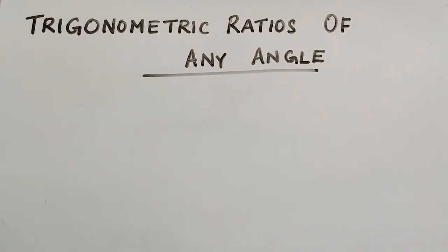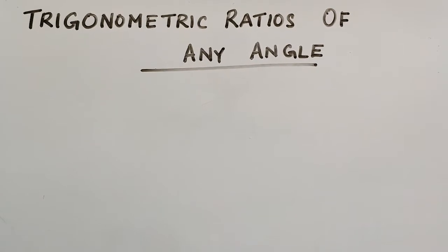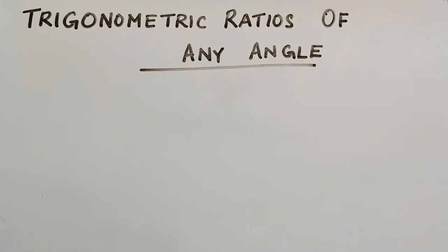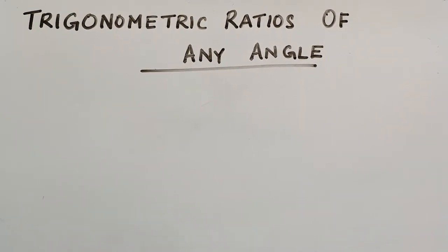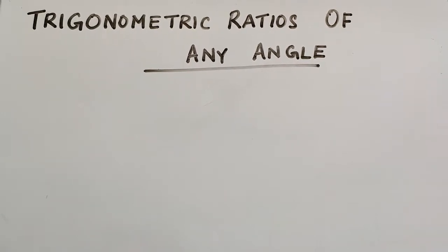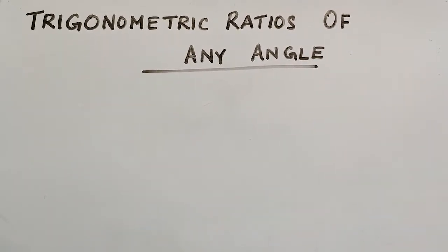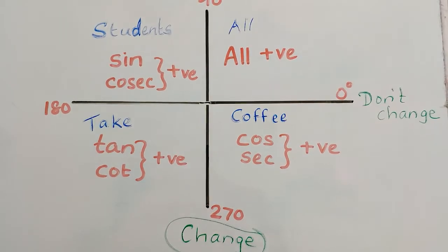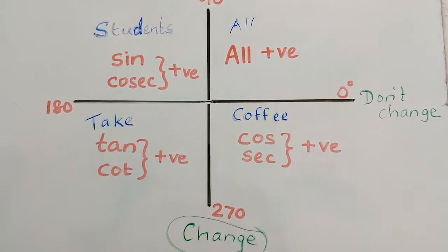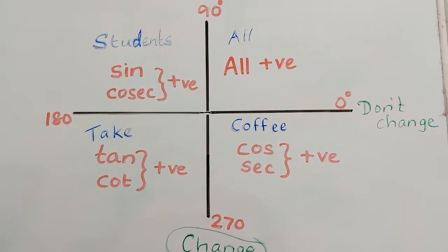Hi students. In my previous video I explained the trigonometric ratios of complementary angles. We know that complementary angles lie in the first quadrant — that means angles between 0 degrees and 90 degrees. If you know these things, you can easily find trigonometric ratios of any angle. Once again I will explain.